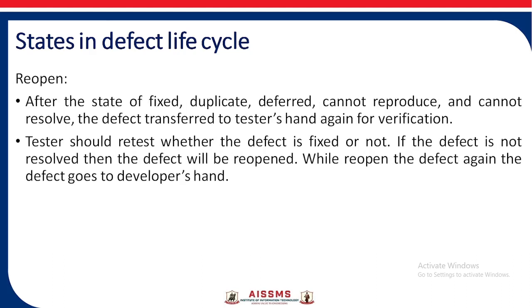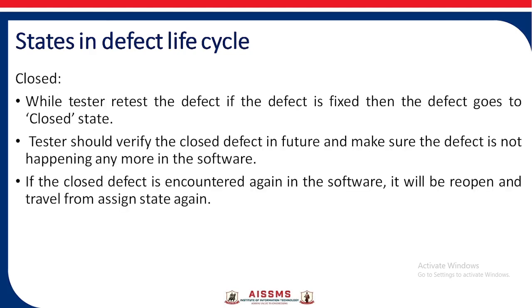Reopen: after the states of fixed, duplicate, deferred, cannot reproduce, or cannot resolve, the defect is transferred again to the tester for verification. The tester should retest whether the defect is fixed or not. If the defect is not resolved, then it is reopened and goes back into the developer's hand. Closed: when the tester retests the defect and it is fixed, then it will be closed. It is also taken care that no such defect occurs in the future.